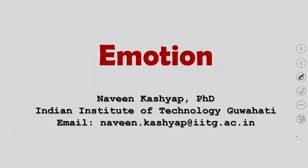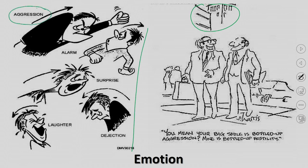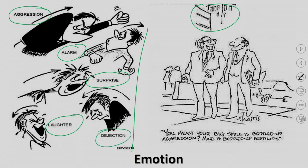Let us start by defining emotion and looking at its parameters, then looking at some theories of emotion. Later we will study one of these theories in detail — the multiple component theory. Starting off with some cartoons to show what emotions are: aggression is an emotion, alarm is an emotion, surprise is an emotion, laughter is an emotion, and dejection is also an emotion. In most of these cases, the person acts in a certain way, decided by a particular mental process.